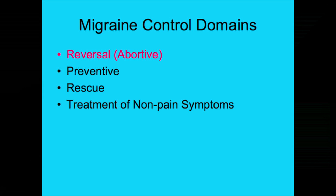I usually like to start talking about the domains of migraine control, and there are four different domains: the abortive — or what we might call the reversal of migraine domain — and then preventive care, rescue care, and treatment of non-pain symptoms. It's my assertion that reversal or abortive care is probably the most important thing you can do for a patient. Even if a patient has good prophylactic therapy but is still having some migraines, they still have to be able to turn them off with an abortive or reversal agent.